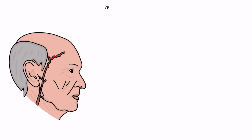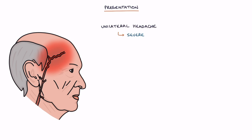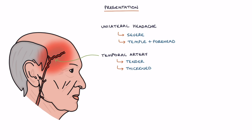Let's go through the presentation. The key presenting feature of giant cell arteritis is a unilateral headache. This headache is typically severe and centred around the temple and forehead on one side. The temporal artery may be tender and thickened on palpation, and the pulse normally felt in the temporal artery may be reduced or absent.